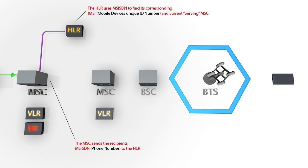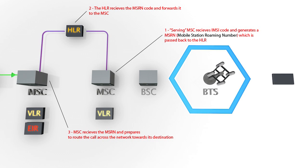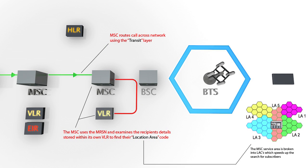the HLR uses the recipient's phone number to search for their associated IMSI and current location. Once these details have been found, they are forwarded to the relevant MSC, which then generates an MSRN code and sends it back through the HLR to the awaiting MSC. After the call has been successfully routed across the network using the supplied MSRN, the serving MSC examines its own VLR to find the recipient's location area code.